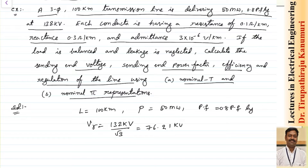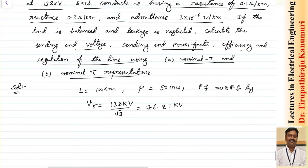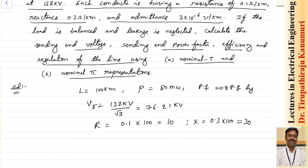Each conductor resistance is 0.1 ohms/km, so total resistance = 0.1 × 100 = 10 ohms. Reactance = 0.3 × 100 = 30 ohms. Admittance Y = 3×10⁻⁶ × 100 = 300×10⁻⁶ mhos.